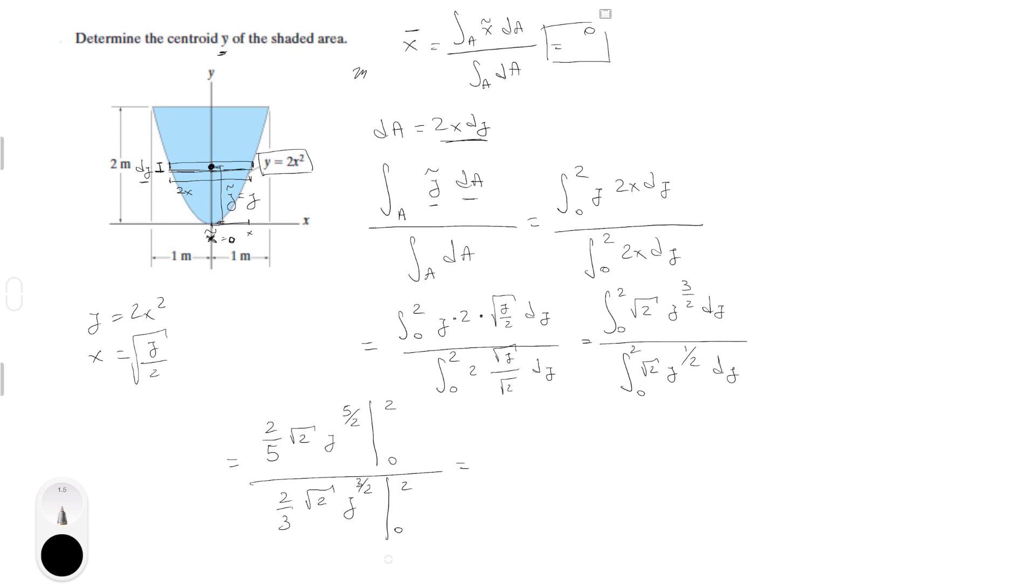When you plug in the numbers, which is 2 and 0, the second one, 0 cancels everything out, so you just gotta basically plug in the 2 and you get 3.2 over 2.67. Just plug in the 2 on the calculator and all of this on the calculator and you'll get it.